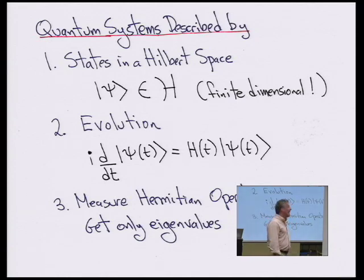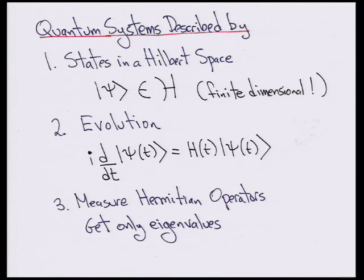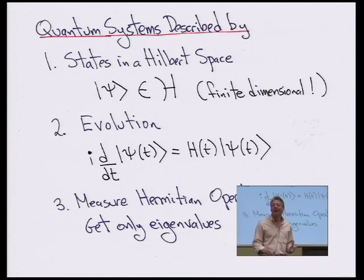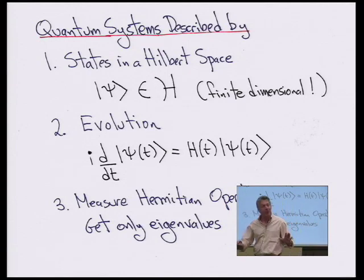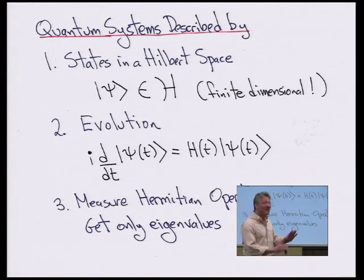Quantum mechanics is the description of nature at its most fundamental level. There has never been a violation of quantum mechanics ever seen. It describes the theory of elementary particles — the strong, weak, and electromagnetic forces are described quantum mechanically. All of chemistry, the entire periodic table, and properties of materials like superconductors are described by quantum mechanics. For the sake of this talk, we are going to assume that quantum mechanics is true — it is the fundamental theory that describes the world around us.